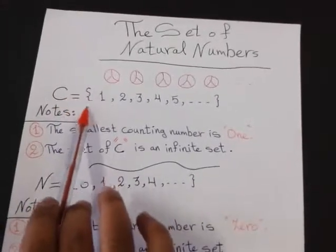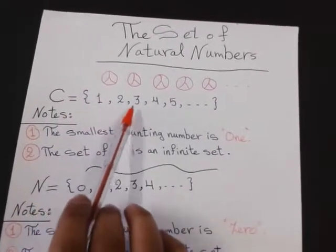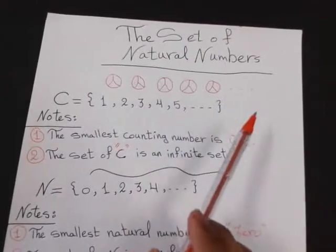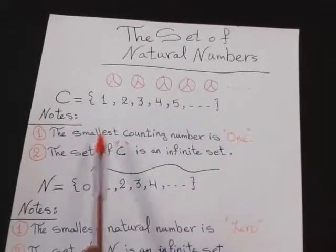C equals open braces, 1, 2, 3, 4, 5, and so on. Close the braces.